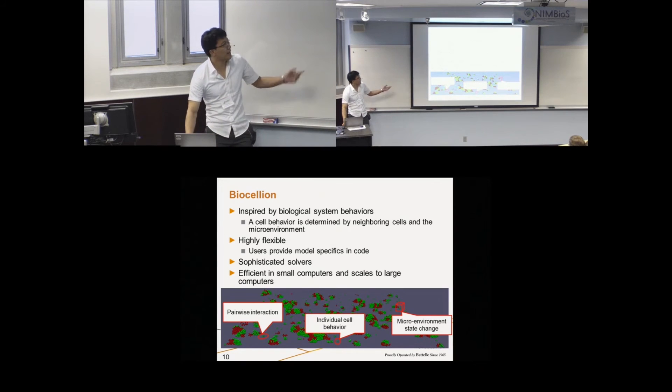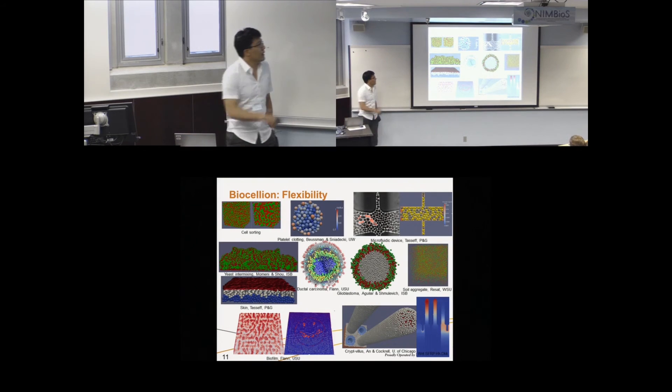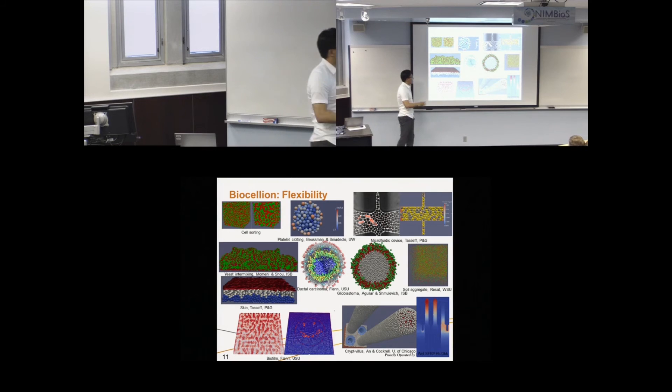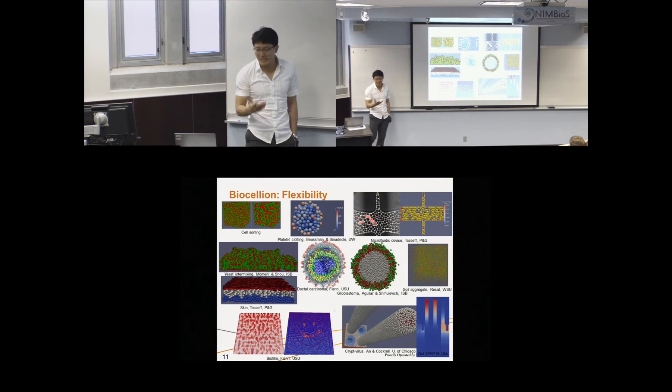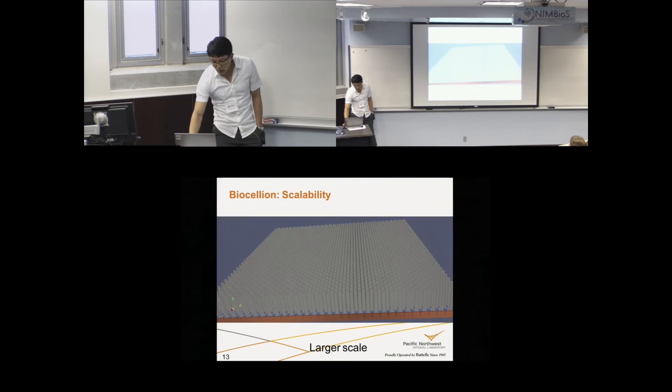Biosalien is efficient in small scales, and scales to large computers. Here's some examples about biosalien's flexibility. We'll build multiple different models, but what I want to emphasize is, if you tune biosalien's performance for one model, other models can also benefit. And if you add additional features to support this model, then other models can also benefit from that. We can more justify investment.